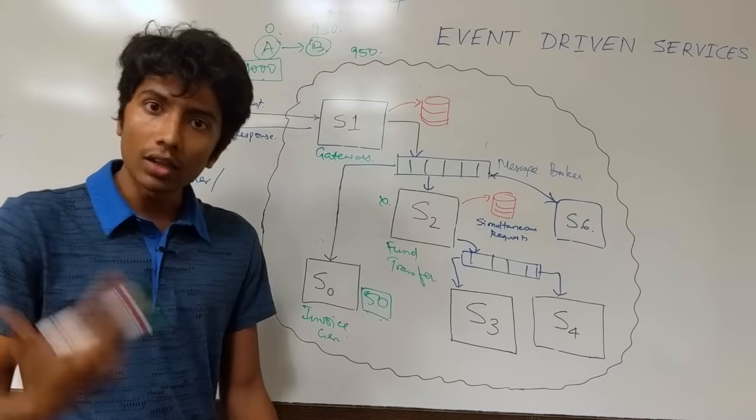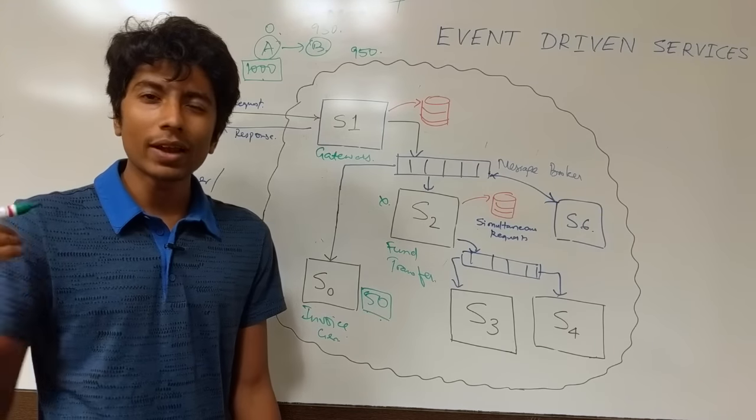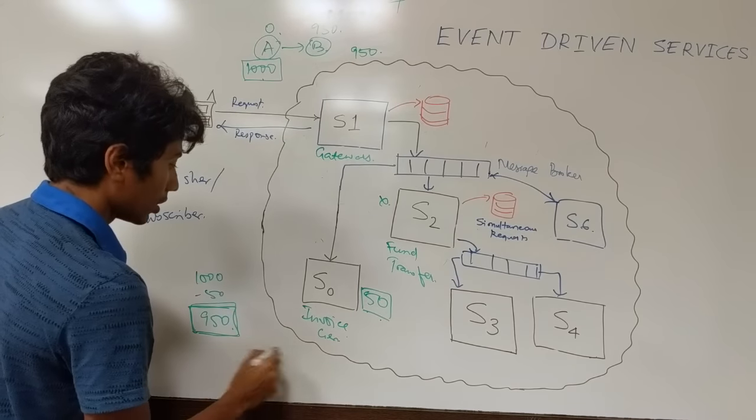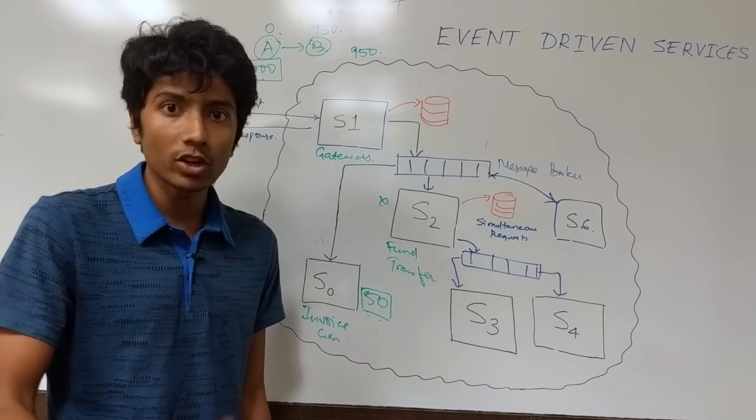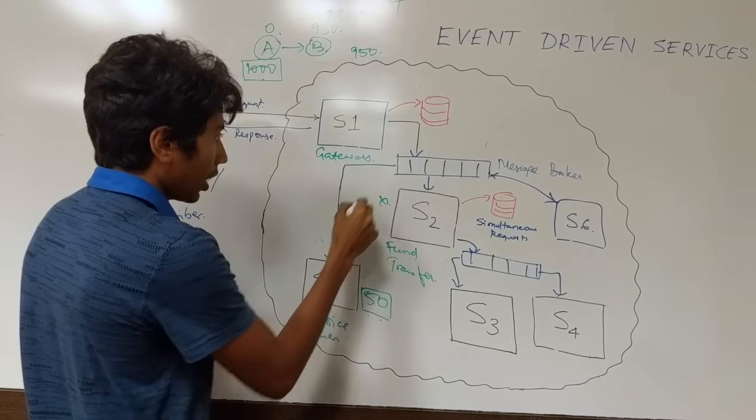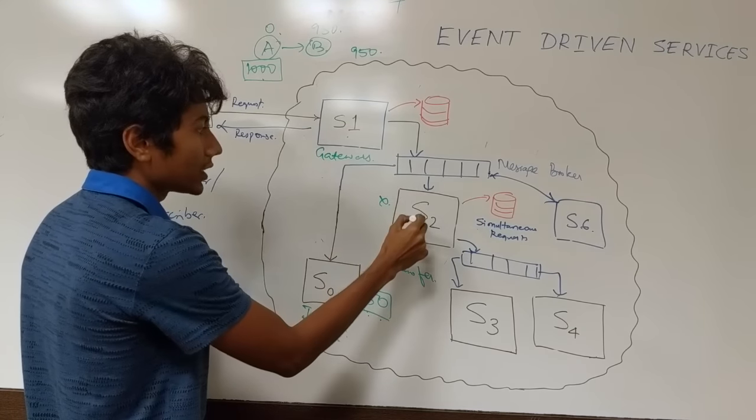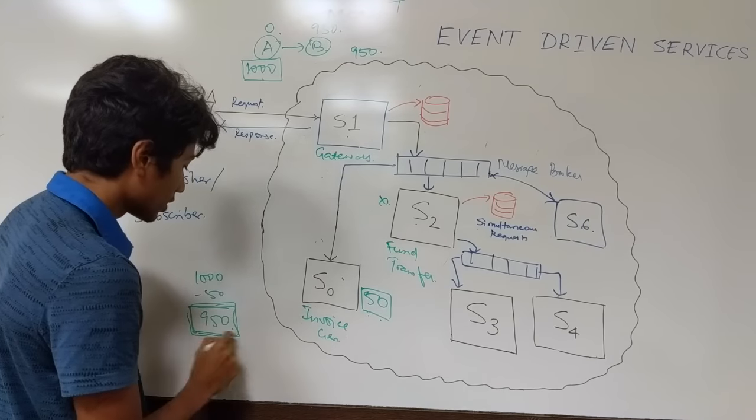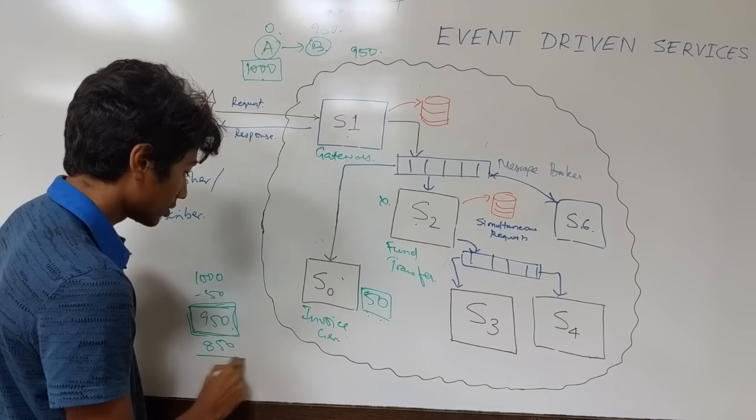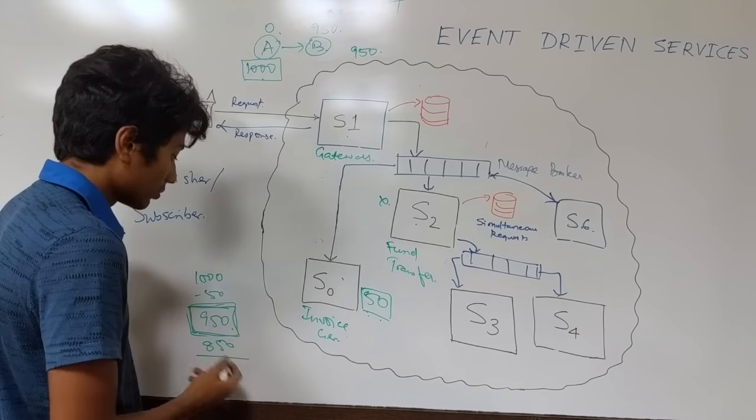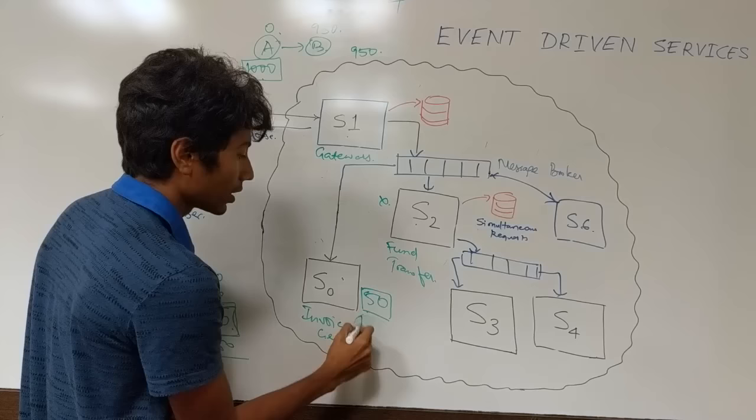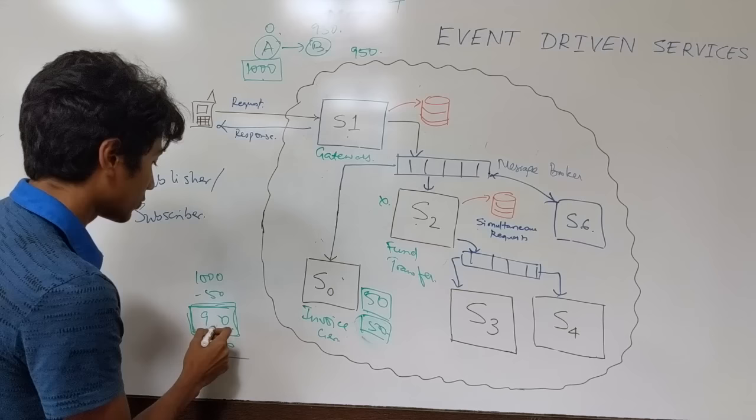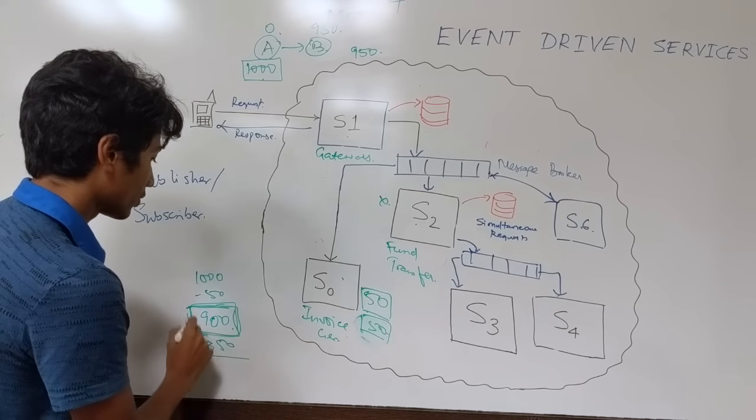The client then sends another request saying that you know what, transfer 800 rupees. So 800 rupees means a commission of 50 rupees. So in total 850 rupees needs to be in your account. The message comes to S1, sends it to S2 and S0. S0 picks up the message, sees that the account currently has 950, you need 850 for this transaction to be successful, and so no problem. Deducting 50 rupees from the total that you have right now, which is 950 minus 50 which is 900, is your current balance.